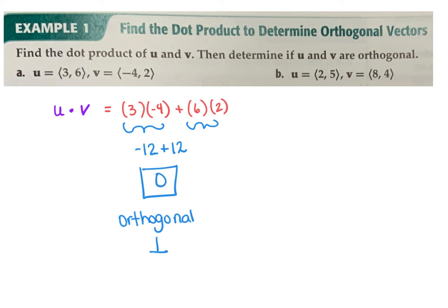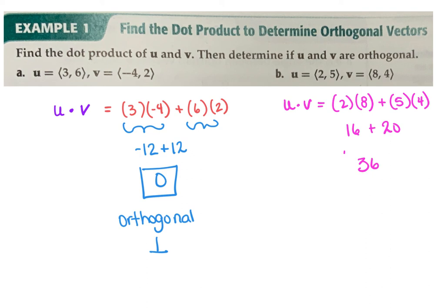For the second dot product between U and V, we do the same thing: X value times X value plus Y value times Y value. The dot product here is 36. These are not orthogonal — so you would say no, they're not orthogonal. At this point, that's all we can tell about it; we'll get more formulas as we go.